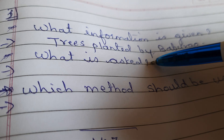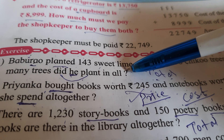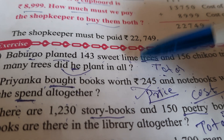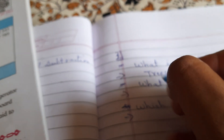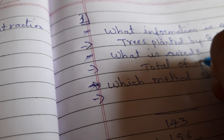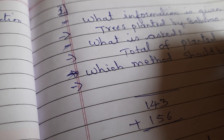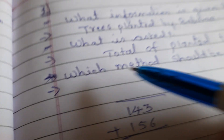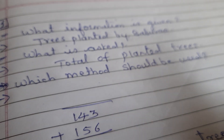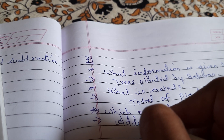Now the next point: what is asked? How many trees did he plant in all? So we need to find the total of planted trees. Which method should be used? Addition. To find out this, we have to do the addition.